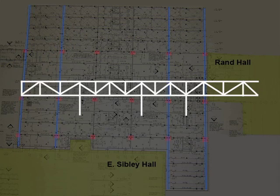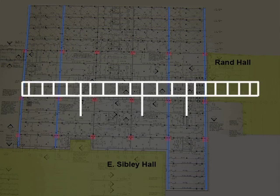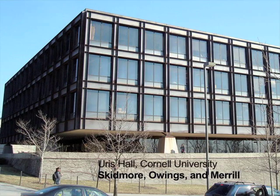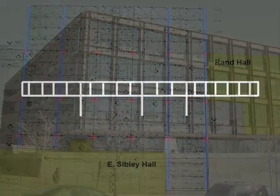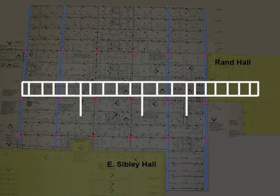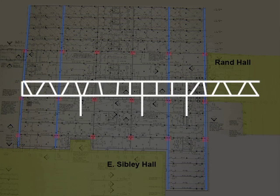These are not true trusses, nor are they orthogonal rigid frames — so-called Vierendeel trusses — like, for example, the multi-story rigid frames of Uris Hall at Cornell. Instead, they are rigid frames, but with some inclined elements to reduce bending stresses where they would otherwise be inordinately high.